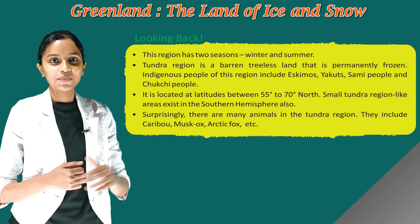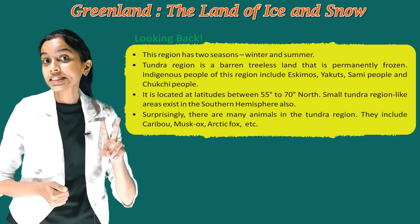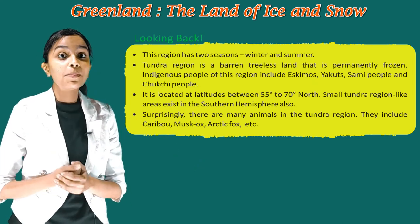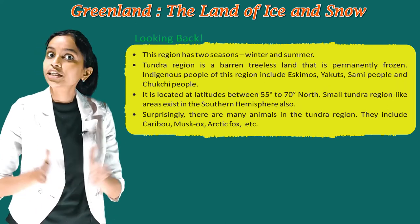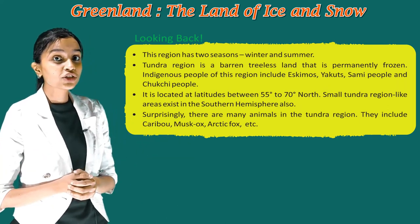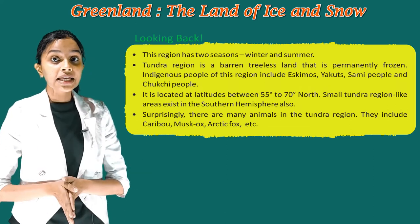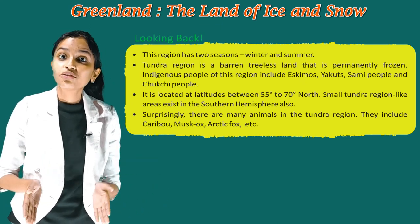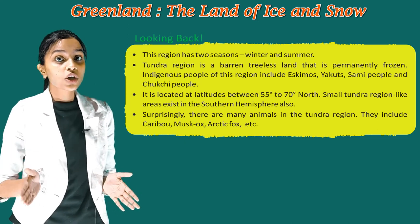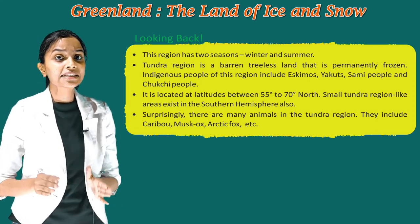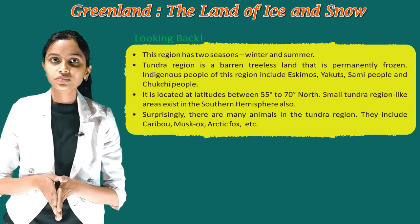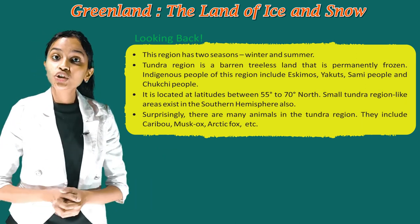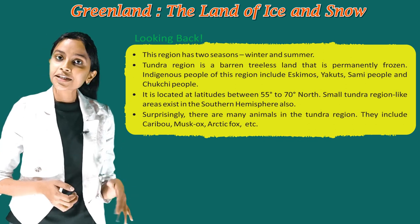Now children, it's time to look back. This region has two seasons: winter and summer. The Tundra region is a barren, treeless land that is permanently frozen. Indigenous people of this region include Eskimos, Yakuts, Sami people, and Chukchi people. It is located at latitudes between 55 degrees to 70 degrees north, but small Tundra-like areas exist in the southern hemisphere also. Surprisingly, there are many animals in the Tundra region — they include caribou, musk ox, arctic fox, and others.